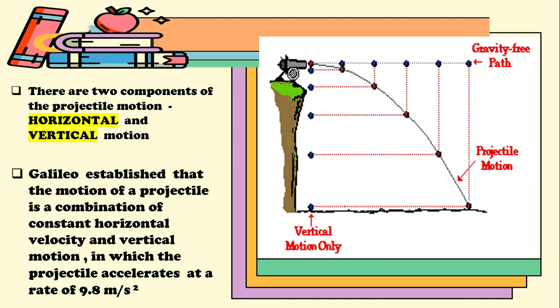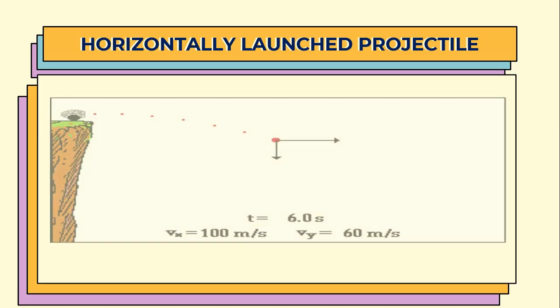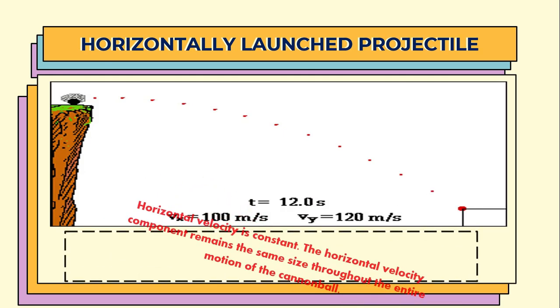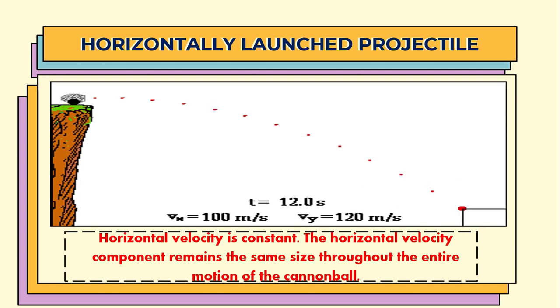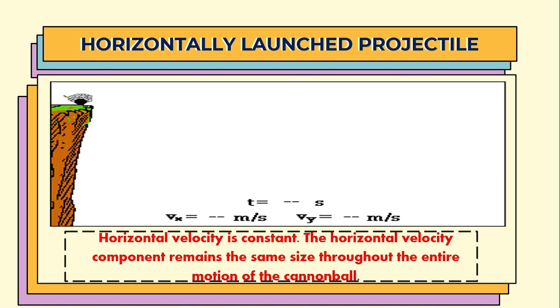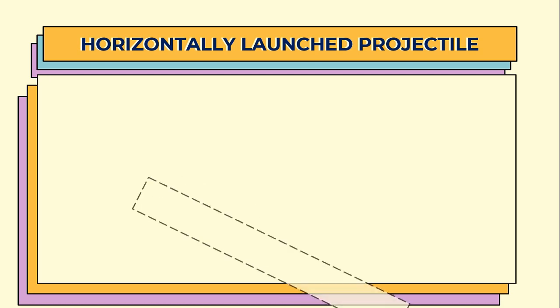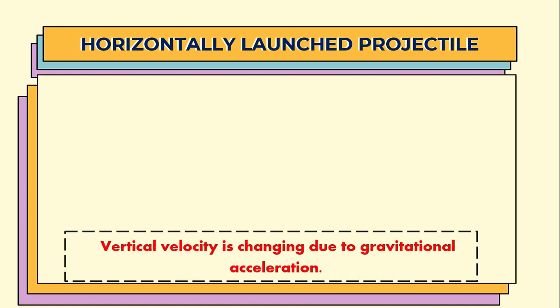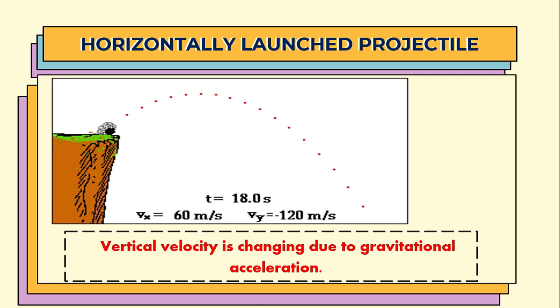In a horizontally-launched projectile, horizontal velocity is constant. The horizontal velocity component remains the same size throughout the entire motion of the cannonball. The vertical velocity is changing due to gravitational acceleration.